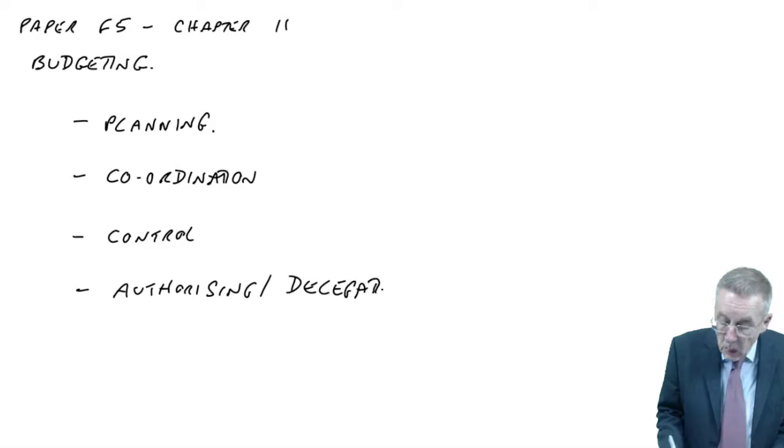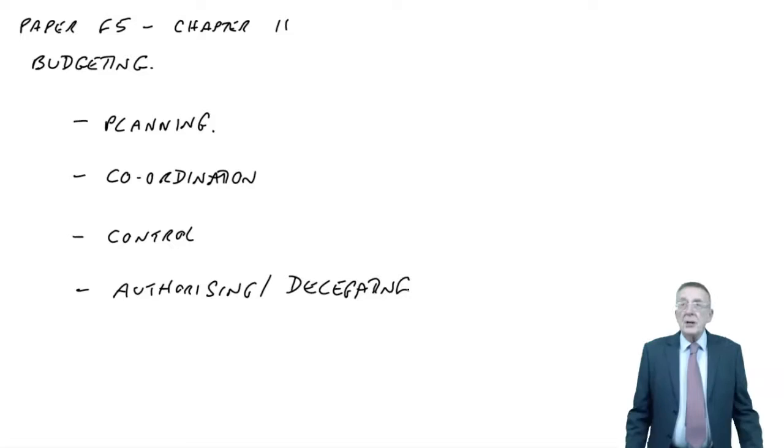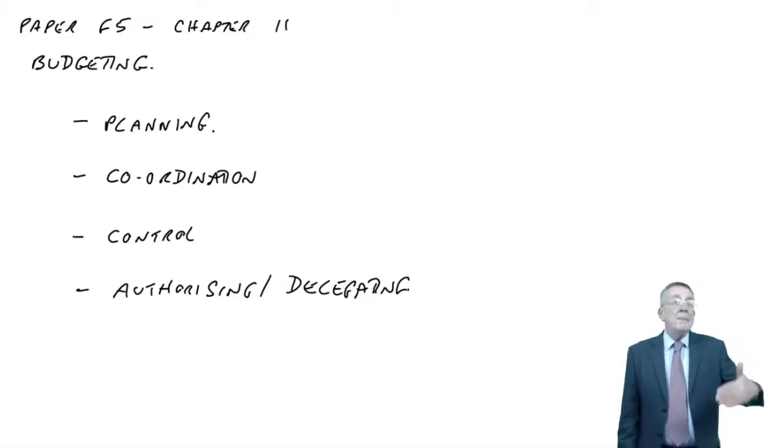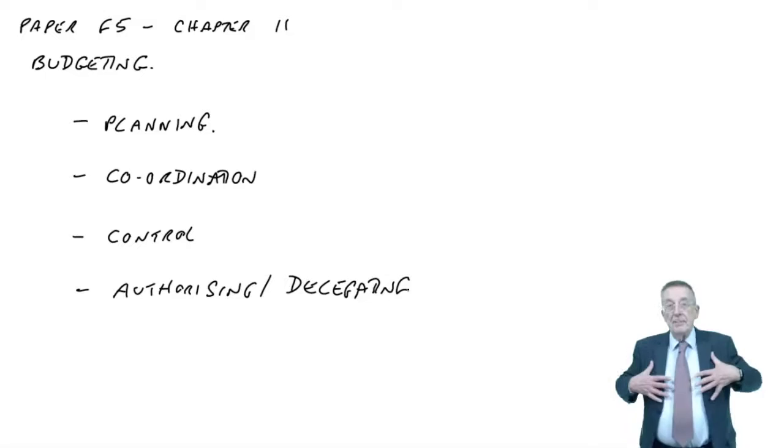Authorising and delegating. What I mean here, I said earlier that maybe we budgeted that based on what we expect to produce, we're going to have to recruit another 500 employees. Well, once that budget is agreed that we need an extra 500, that effectively authorises human resources to get another 500 people.